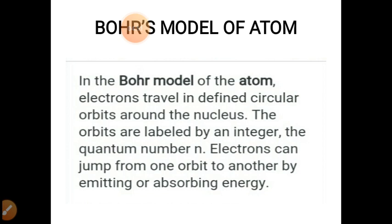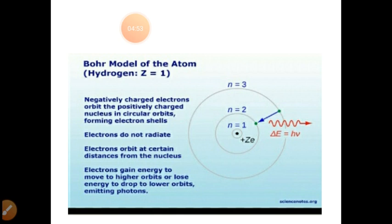Bohr's model of the atom: negatively charged electrons orbit the positively charged nucleus in such orbits forming electron shells. Electrons orbit at certain distances. Electrons gain energy to move to higher orbits or lose energy to drop to lower orbits emitting photons.